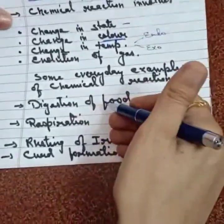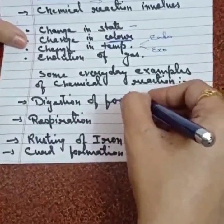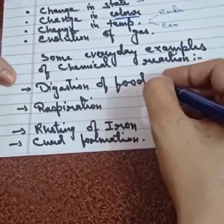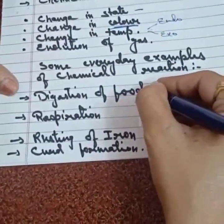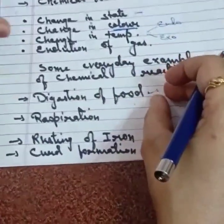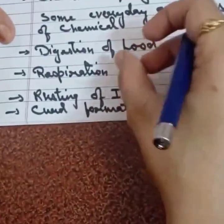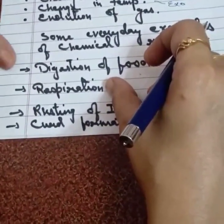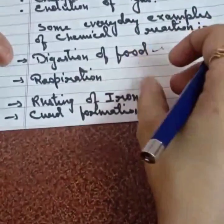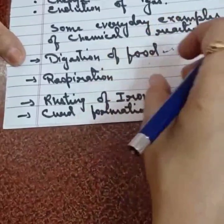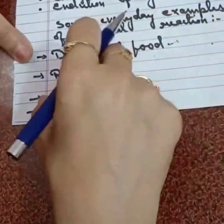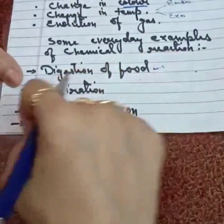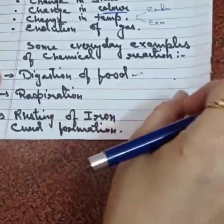For example, digestion of food is an example of a chemical reaction where complex food substances are broken down into smaller, simpler substances. Respiration is also a chemical reaction. Rusting of iron — a very common example that everyone must have seen — is also an example of a chemical reaction. Curd formation is again an example of a chemical reaction.